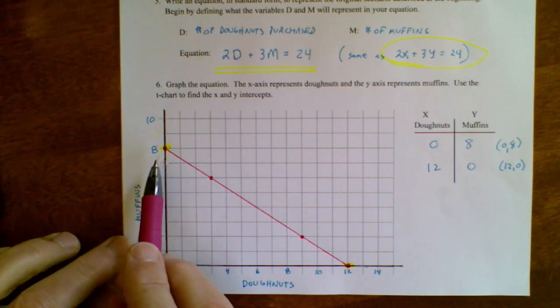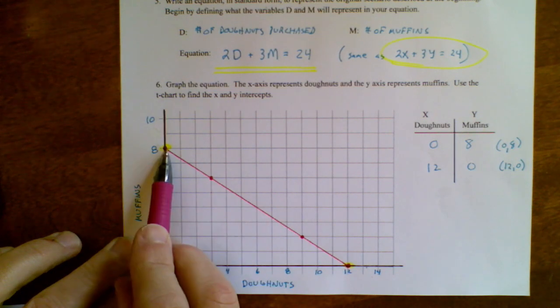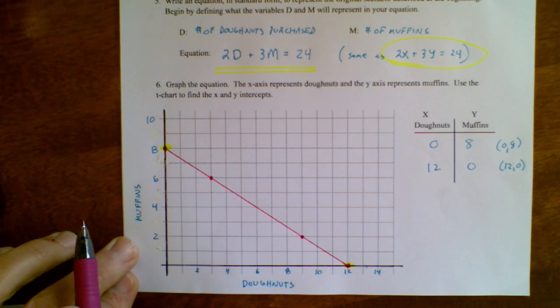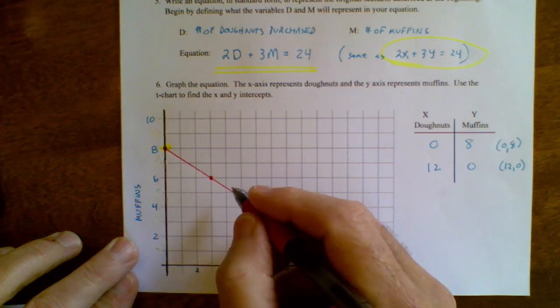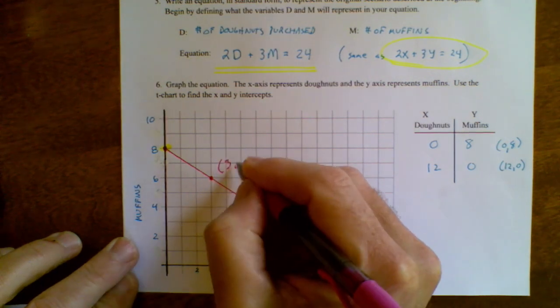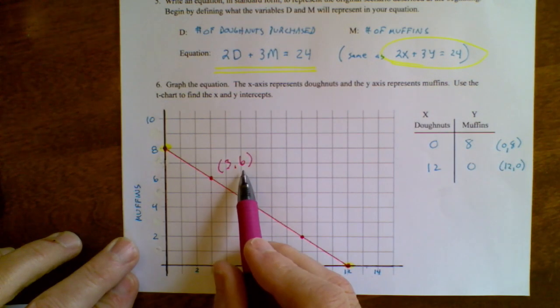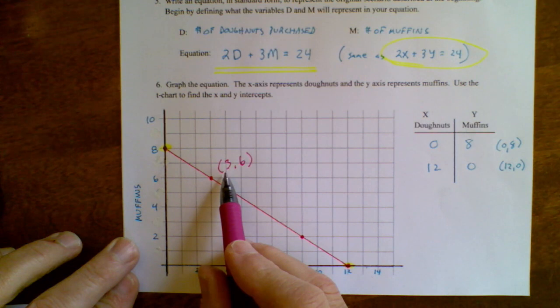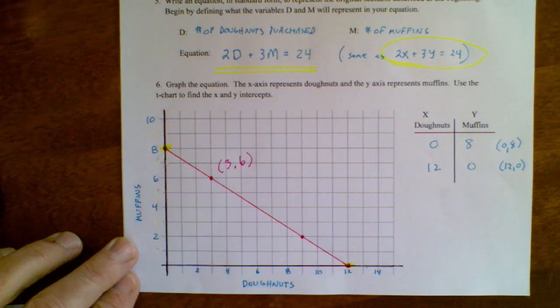It's important to know this concept. Any point on this line is a valid combination of donuts and muffins that you can go ahead and purchase. For example, this point right here is an x equals 3, y equals 6. 3 comma 6 means, in this case, 3 donuts and 6 muffins are eligible to be purchased.